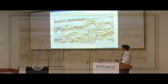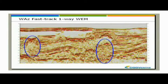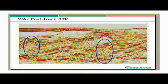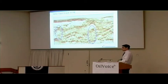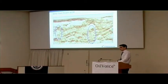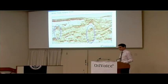Looking at wide azimuth imaging: this is a fast-track wave equation migration in the Gulf compared to RTM. In the more complex zones, RTM is providing an improved image, as we'd expect.